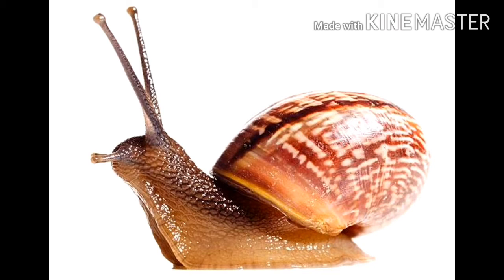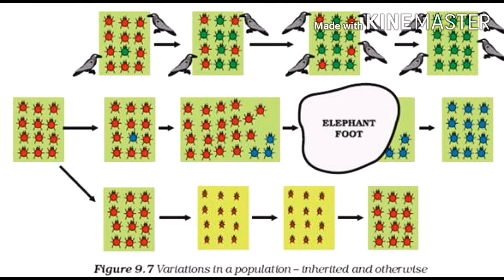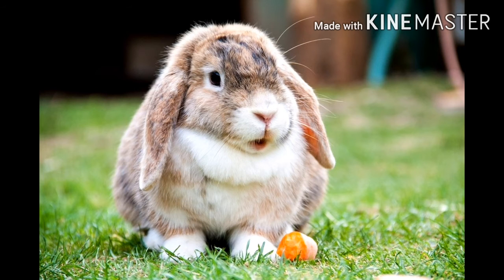The various organisms present today have evolved from simple ancestral forms that existed in the past. These changes or modifications are called variations and we have studied about variations earlier in this chapter.